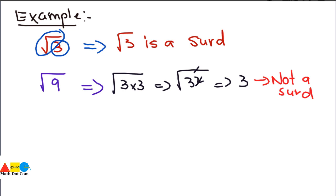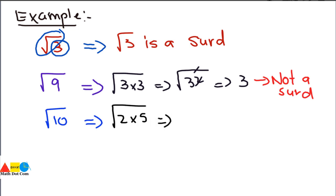A few more examples: square root of 10. First, find the factors — the factors of 10 are 2 × 5, so we write square root of (2 × 5). Can you simplify it further? No, there is no perfect square here, so we keep the number as it is. We then check: is the radicand rational? Yes. Is the radical irrational? Yes. So we can say that square root of 10 is a surd.